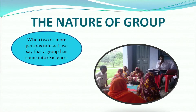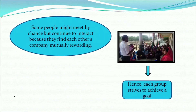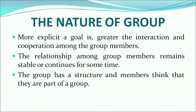The Nature of Group: When two or more persons interact, we say that a group has formed or come into existence. Some people meet by chance but continue to interact because they find each other's company mutually rewarding. Each group strives to achieve a goal. The more explicit a goal is, the greater the interaction and cooperation among group members. The relationship among group members remains stable for some time, and the group has a structure where members think they are part of a group.